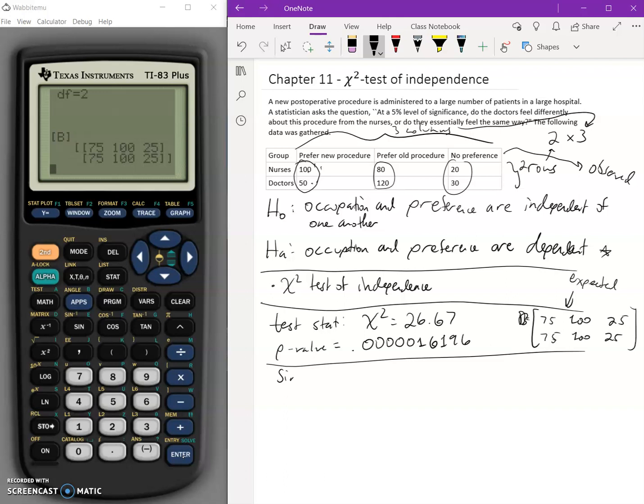So we have our conclusion. Since the P value is equal to 0.000016196, which is obviously less than 0.05, which is alpha. Remember, with this 5% significance, this is the same thing as saying that alpha is equal to 0.05. So since our P value is less than alpha, we reject the null hypothesis.